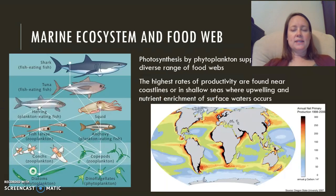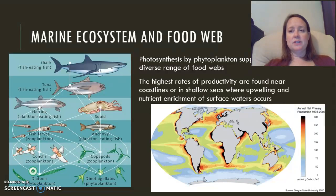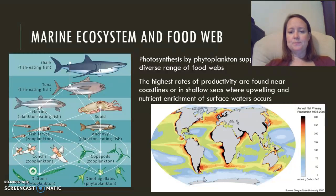Before we get into the fishing methods we need an understanding of food webs in marine ecosystems. Our producers in the marine food web are phytoplankton, and they support many different food webs throughout the ocean depending on the location. The map in the bottom right-hand corner shows where the highest rates of productivity are in the oceans — the most highly productive areas are around the shorelines or in shallow seas.